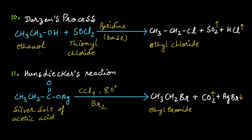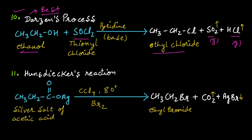Now come two important reactions: Darzen's process and Hunsdiecker's process. Darzen's process is the best method for the preparation of alkyl halide. The byproducts SO₂ and HCl are in gaseous state, so they are removed on their own. When ethanol is treated with thionyl chloride (SOCl₂) — not sulfuryl chloride (SO₂Cl₂) — in the presence of pyridine as a base, you will get ethyl chloride as the final product.